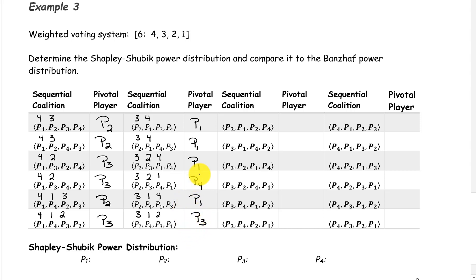Go ahead and pause the video and fill in who the pivotal player is for the last half of these sequential coalitions. When you finish, start the video back up and check to see if you get the same thing.